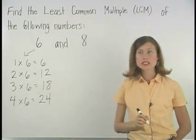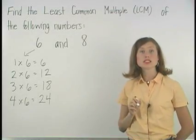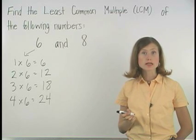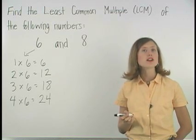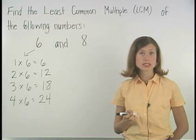Notice that we skipped 0 times 6 in our list of multiples. That's because 0 times 6 is 0, and our least common multiple can't be 0.